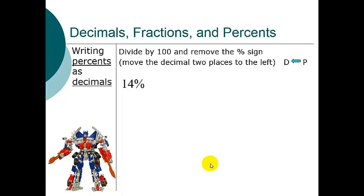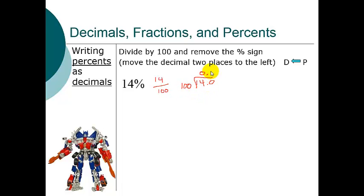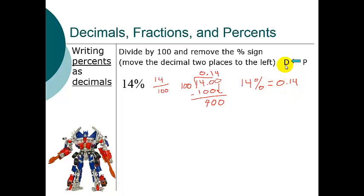Now let's go from a percent to a decimal. Just like we multiplied by 100 to go one way, we divide by 100 to go the other. For 14%: write it as 14/100 and divide — 14 ÷ 100 = 0.14, or fourteen hundredths. The shortcut is to move the decimal two places to the left.